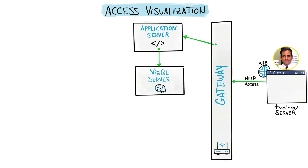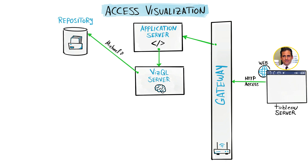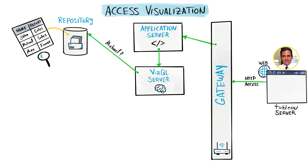From here, the VizQL server takes over and says: first thing first, let's check if Michael is allowed to see the sales dashboard. So VizQL asks the repository, which contains a list of users and reports. It searches there to find any matches, and if yes, it sends back confirmation that Michael is allowed to see the sales dashboard.